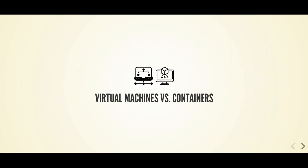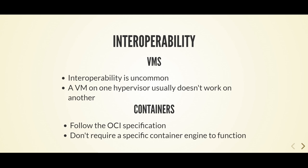Virtual machines and containers use different software for management and functionality. Hypervisors such as KVM, Xen, VMware, and Hyper-V provide virtualization for virtual machines, while container engines like Podman handle containers. You can manage hypervisors with additional software, which may be included with the hypervisor or external, like Virtual Machine Manager with KVM. In contrast, containers can be managed directly through the container engine. For managing containers at scale, tools like Red Hat OpenShift are used. With virtual machines, interoperability is uncommon — a VM that runs on one hypervisor usually doesn't work on another. Containers, however, follow the Open Container Initiative specification, meaning they don't require a specific container engine to function, and many container engines can act as drop-in replacements for each other.